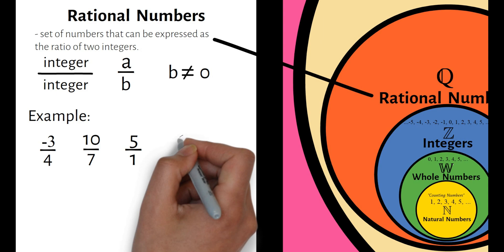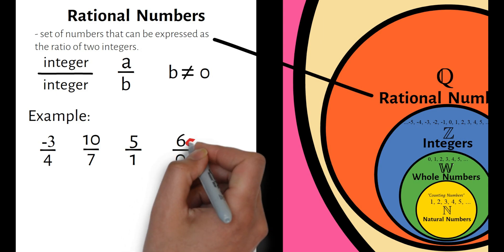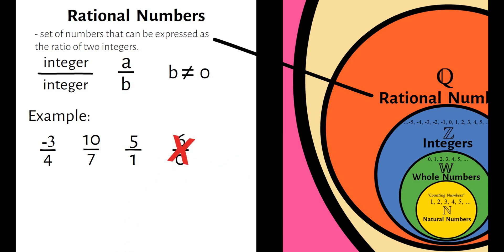For 6 over 0, hindi natin ito makukonsider as rational number kahit fraction siya, dahil ang pagdivide ng 0 ay nakakakuha ng undefined na answer. So ulitin ko, ang mga rational numbers ay ratio ng dalawang integers except kapag ang denominator ay 0.